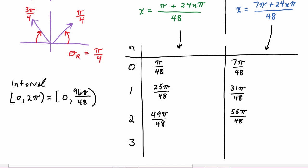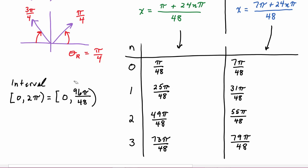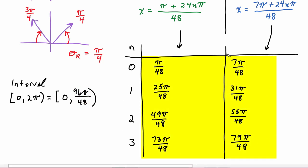Plugging n = 3 into the first formula: twenty-four times three is seventy-two, so seventy-two pi plus pi is seventy-three pi over forty-eight — still within the interval. Plugging n = 3 into the second formula: seventy-two pi plus seven pi is seventy-nine pi over forty-eight — still within the interval. If we plug in n = 4, twenty-four times four is ninety-six, and adding one more would take us outside our interval. So these are the eight solutions to our equation.